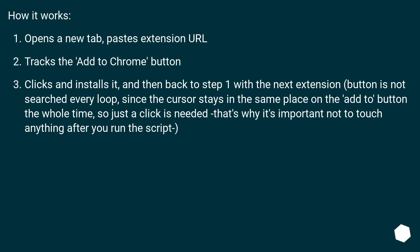How it works: Opens a new tab, pastes the extension URL, then tracks the 'Add to Chrome' button and clicks to install it. Then it goes back to step 1 with the next extension. The button is not searched every loop since the cursor stays in the same place on the 'Add to Chrome' button the whole time, so just a click is needed. That's why it's important not to touch anything after you run the script.